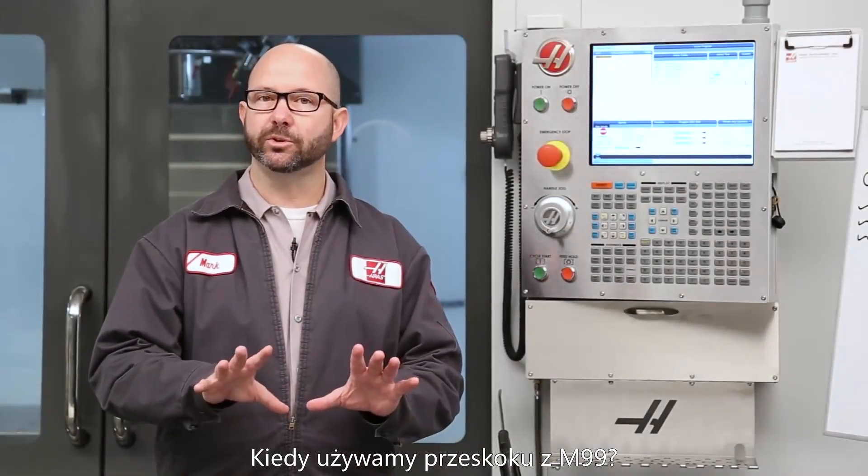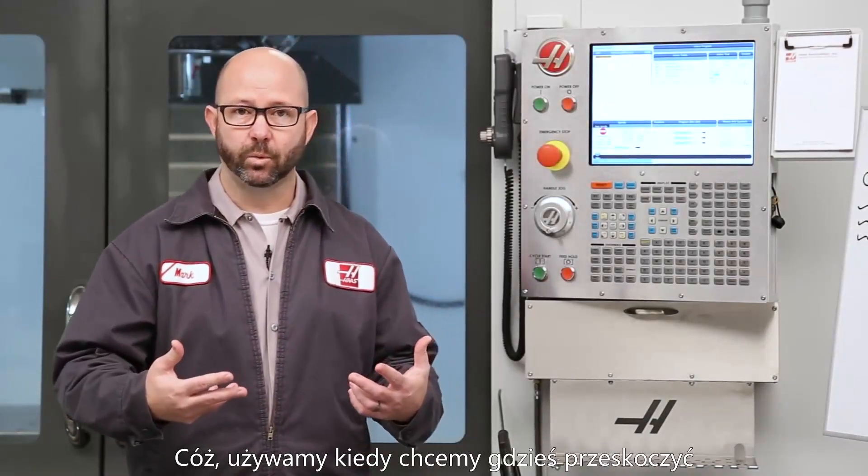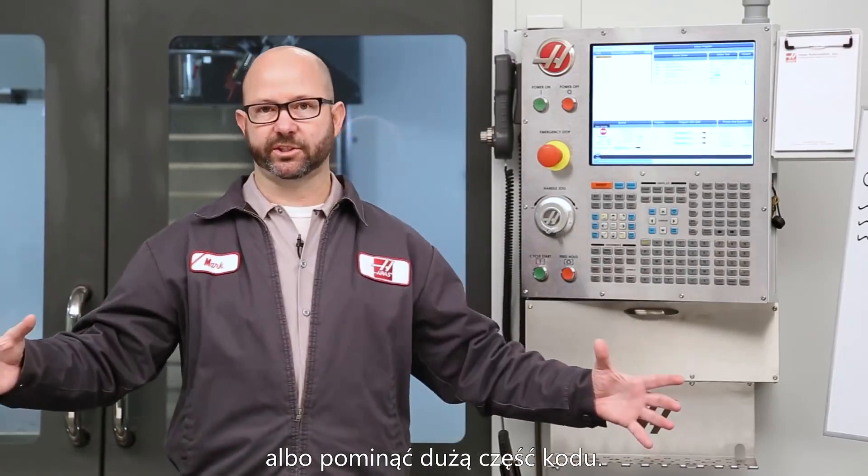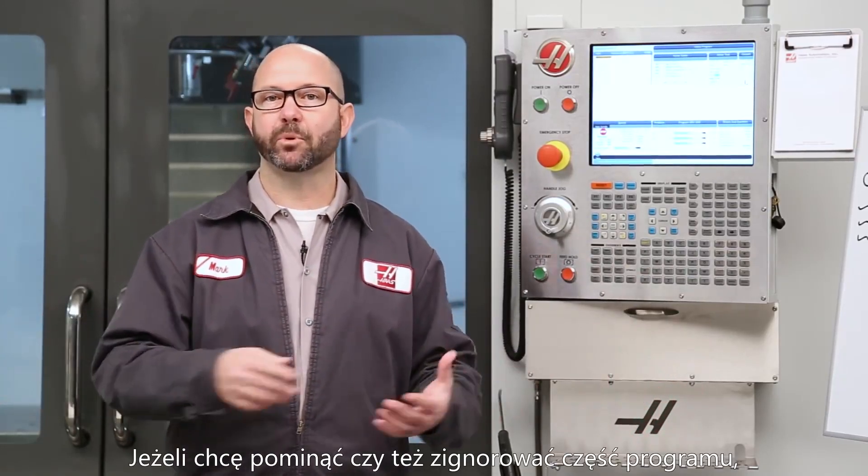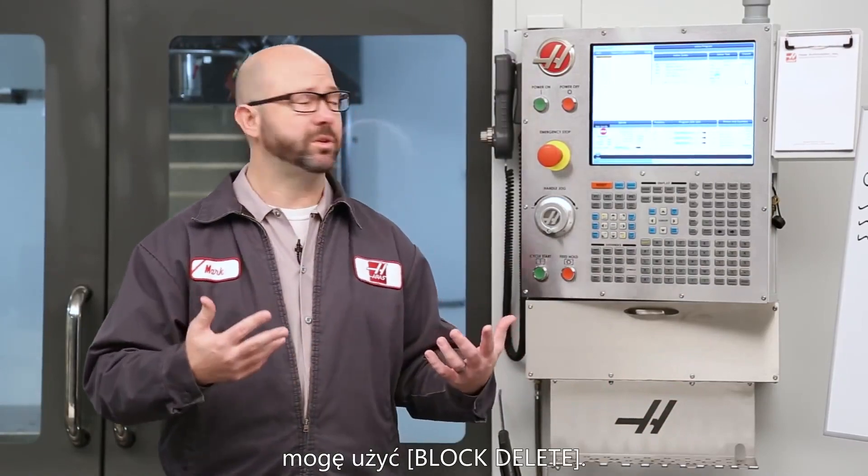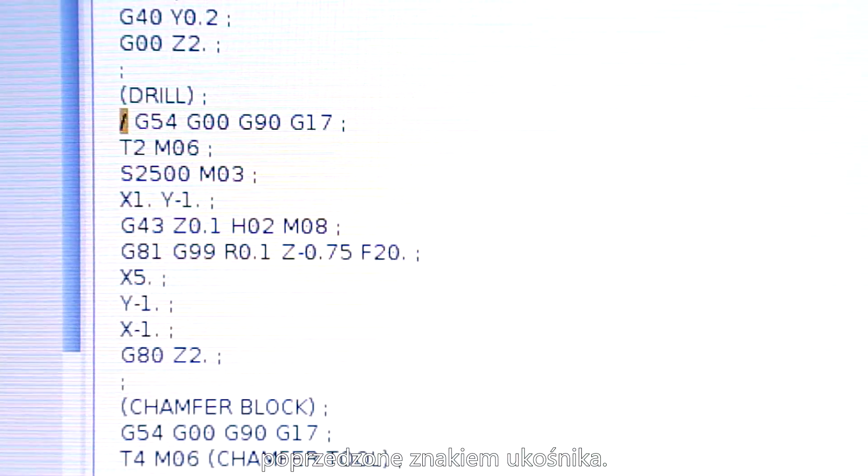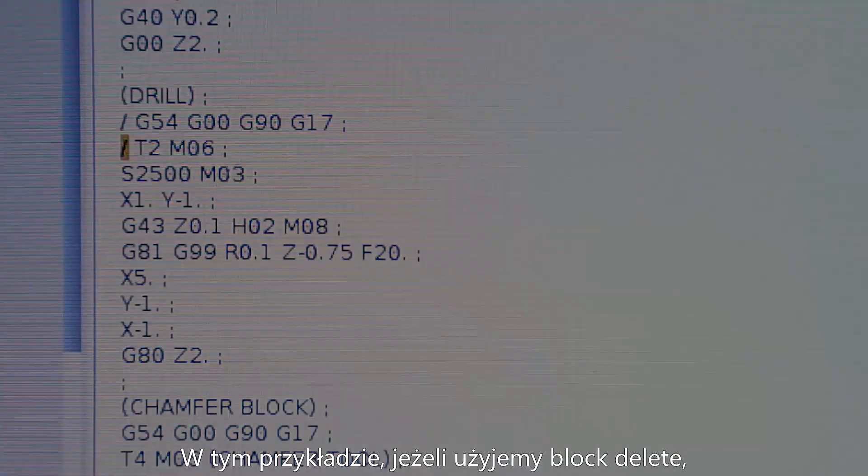So when would we want to use an M99 jump? We're going to use it if we want to jump over or ignore large sections of code. If I just want to skip or ignore a couple lines of code, I'm going to use Block Delete. When Block Delete is on, the control ignores the code following a forward slash on that same line.